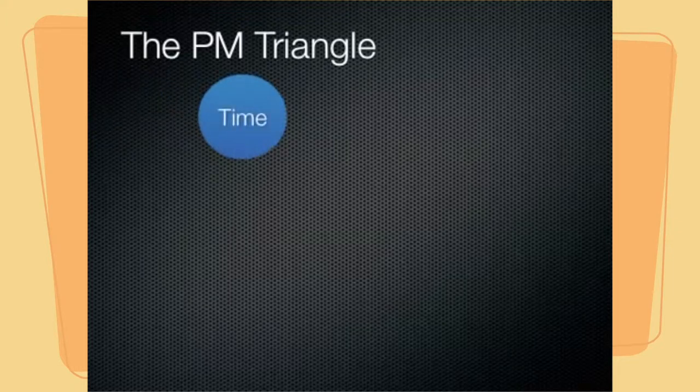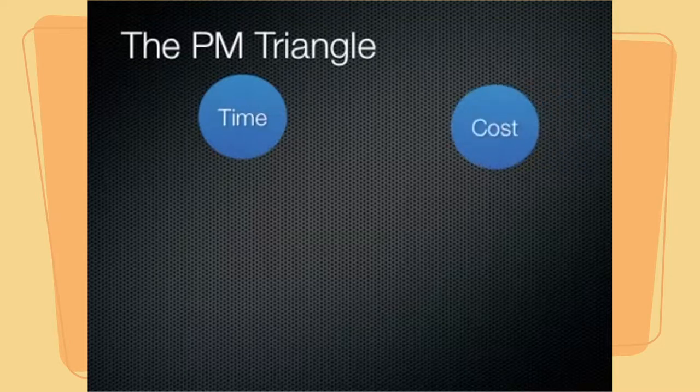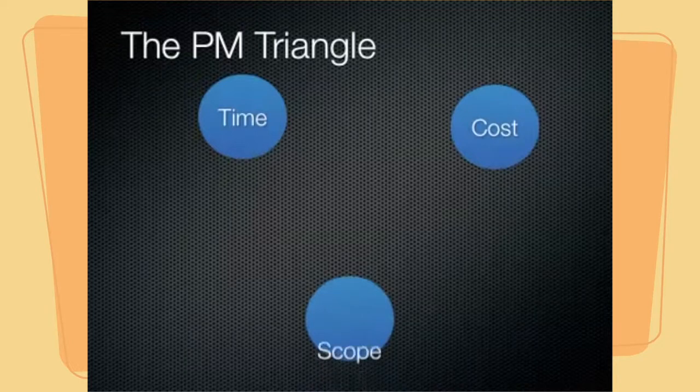First is time, the time that it takes to successfully complete our project. The second is the cost, the cost that is required in order to successfully complete our project. And the third aspect is scope.